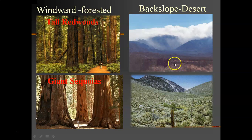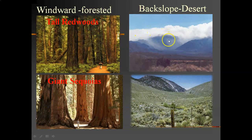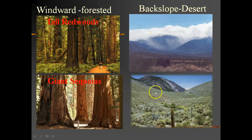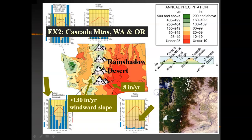Here in Nevada in the Owens Valley, facing one of the mountains in the Sierra Nevada, you can actually see the orographic cloud right on the windward slope, and you can actually see the cloud evaporating as the air is sinking and heating up, creating the high pressure conditions. It's quite interesting.